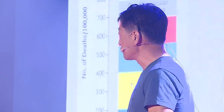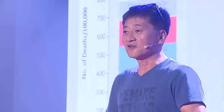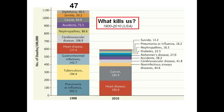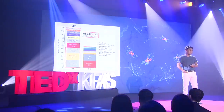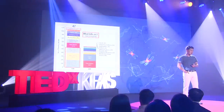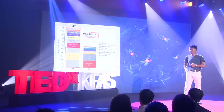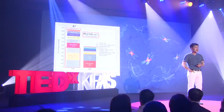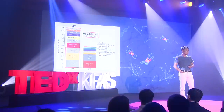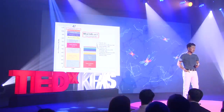As of today, year 2010, you can see a different list of causes of death, and you may have already noticed that the diseases I greyed out here are infectious diseases — diphtheria, pneumonia, tuberculosis. Those infectious diseases have essentially been eradicated, thanks to the discovery of antibiotics and vaccines.